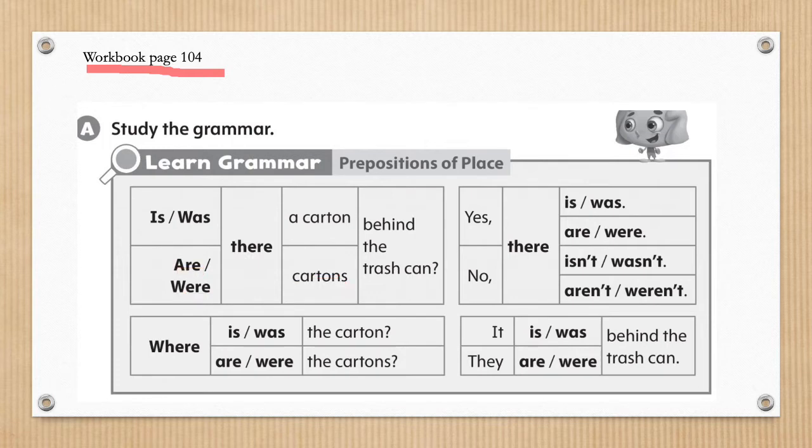Then students, we move on to WHERE. Remember, IS and WAS for singular, and ARE and WERE for plural. Where is the carton? Where was the carton? Where were the cartons?